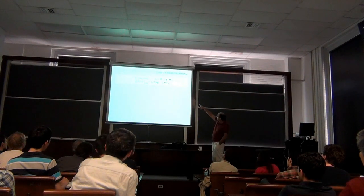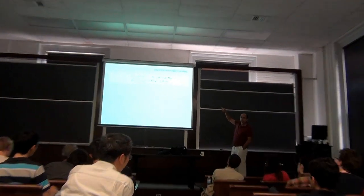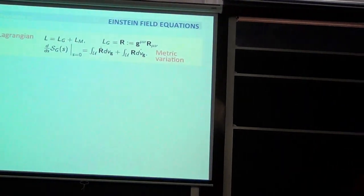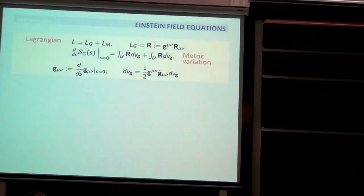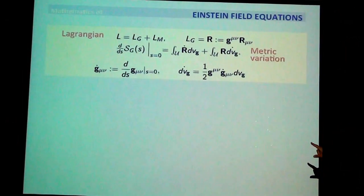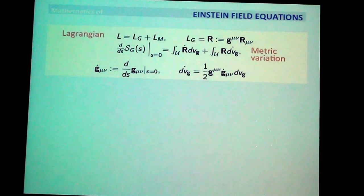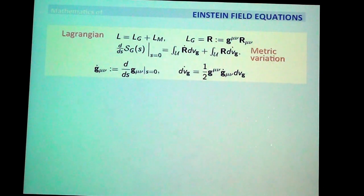The scalar curvature gives one term, and the other term gives you the variation of the volume form, which you have to calculate. First, you write g-dot to be the derivative of the variation of the metric at s equal zero. The variation of the metric g-dot mu-nu gives the volume form as one-half of g-mu-nu g-dot mu-nu times the volume.